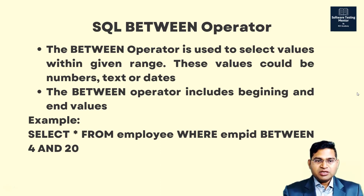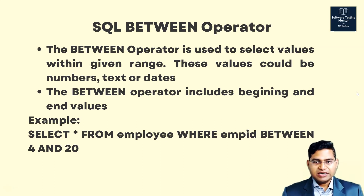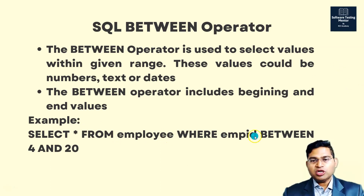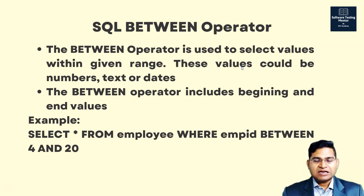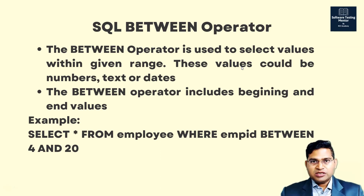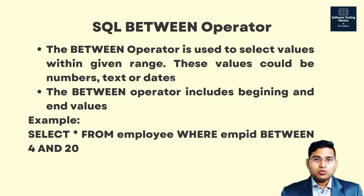For example, if we want to select employees where the employee IDs are between 4 and 20, we can write: SELECT * FROM employee WHERE employee_id BETWEEN 4 AND 20. That is how we use the BETWEEN operator to fetch values within a particular given range, whether for testing or development purposes.